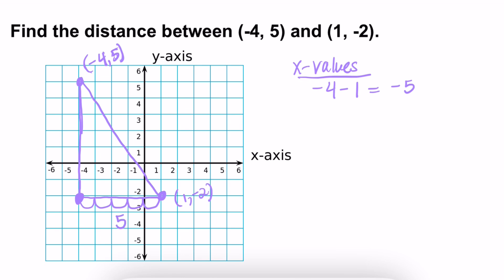Okay, and then with the y values, you can use math. 5 minus negative 2, that's going to get you 7. Or you can just count: 1, 2, 3, 4, 5, 6, 7. And that is 7 units.